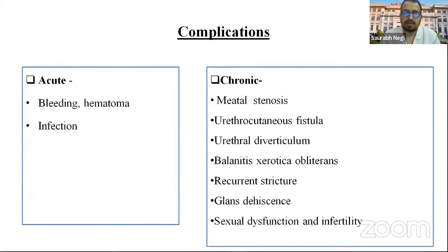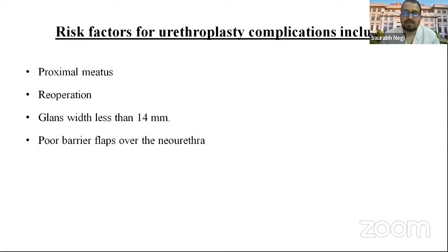Complications include acute or chronic. Acute include bleeding, hematoma, or infection. Chronic complications include meatal stenosis, urethrocutaneous fistula, urethral diverticulum, balanitis xerotica obliterans, circumferential strictures, glans dehiscence, sexual dysfunction, and infertility. Risk factors for urethroplasty complications include more proximal meatus, re-operation, glans less than 14 mm, and poor barrier overlap over the neo-urethra.